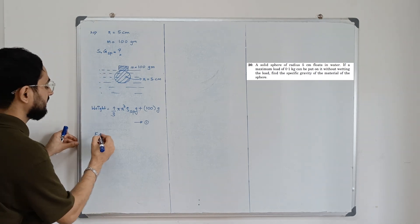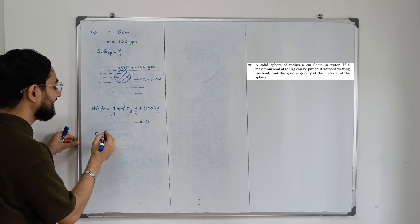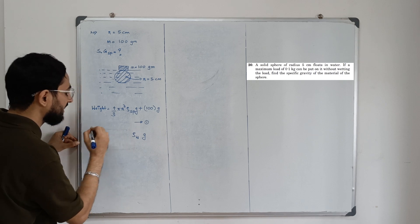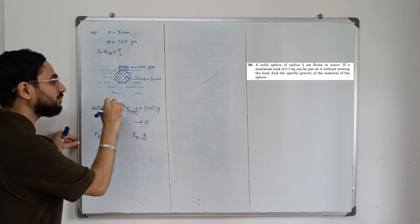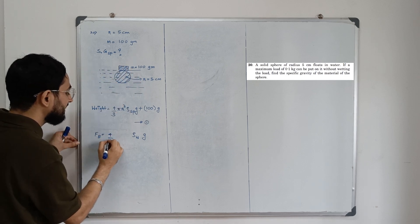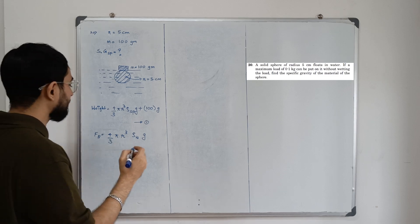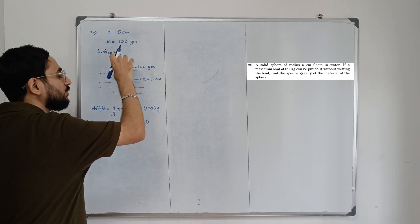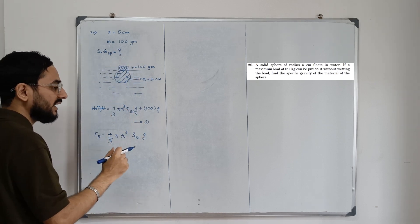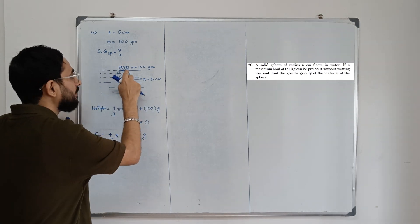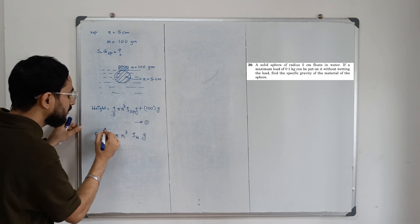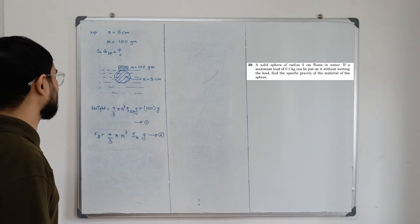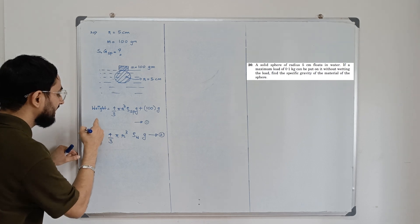For force of buoyancy: F_b = volume of solid submerged in liquid × density of water × g. Here only the sphere is submerged — the load is not in the water. So volume submerged = volume of the sphere = (4/3)πr³. Therefore F_b = (4/3)πr³ × ρ_water × g. This is equation number two.